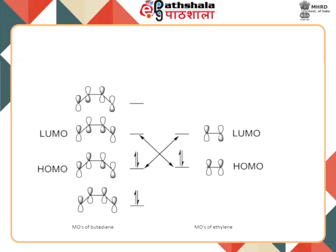The Diels-Alder reaction — a 4+2 cycloaddition between maleic anhydride and cyclopentadiene — is a suprafacial reaction with one 4Q+2 suprafacial component and no 4R antarafacial component, meaning the reaction is thermally allowed. The HOMO of butadiene and the LUMO of ethylene are both anti-symmetric and rotationally symmetric, confirming the reaction is allowed.